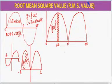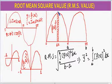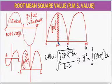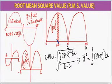Now let us take a smaller strip of width dx. The area of the smaller strip is [f(x)]² · dx.